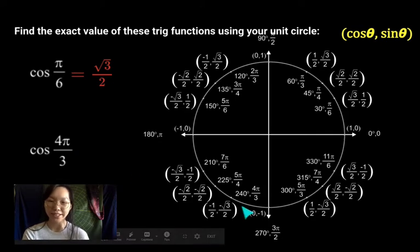Did you find it? It's right here. And notice 4 pi over 3 has an x coordinate of negative 1 half. There it is right there.